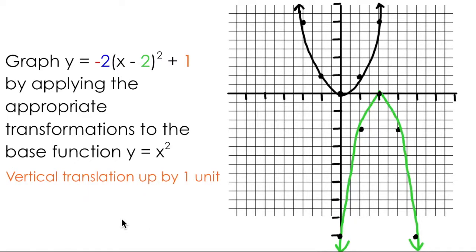The last transformation reading from left to right is a vertical translation up by 1 unit. I can take each of the points on this green graph and move them up by 1 to produce this orange graph.